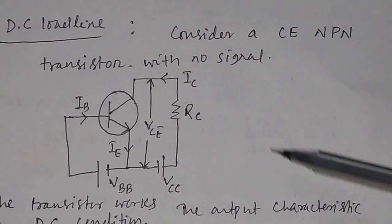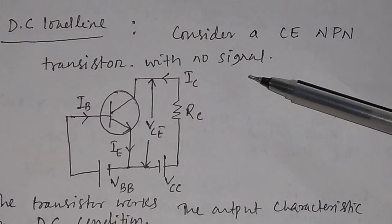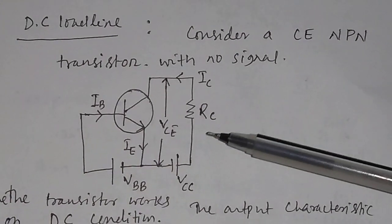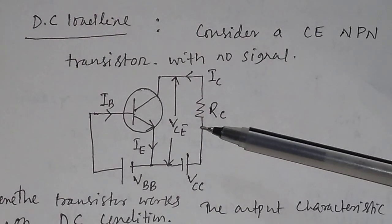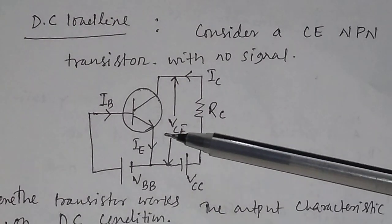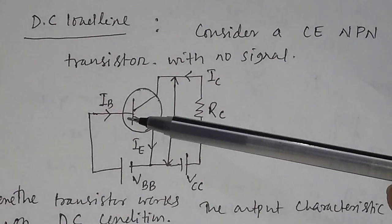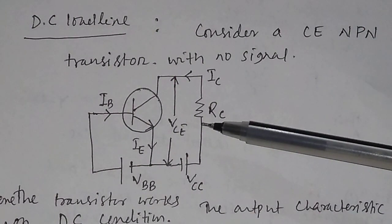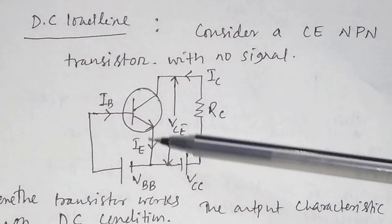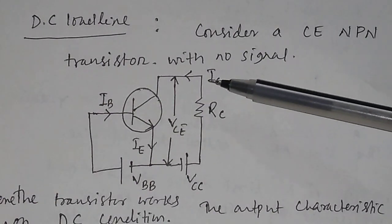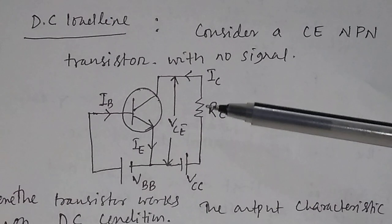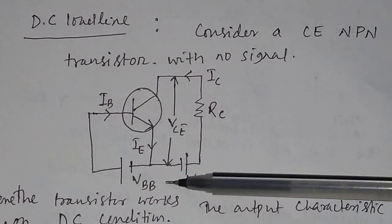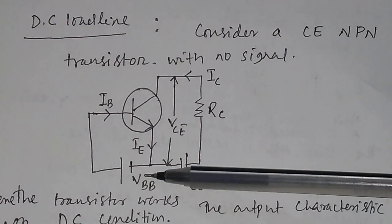To understand the DC load line, let us take an example of an NPN transistor. I have taken here a common emitter NPN transistor. This is the basic circuit diagram: the emitter is common to both base and collector. The emitter current is IE, the base current is IB, and the collector current is IC. The load resistance is RC, the output biasing battery is VCC, and in the input you give the biasing battery VBB.